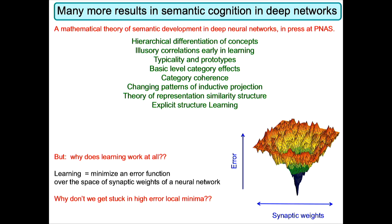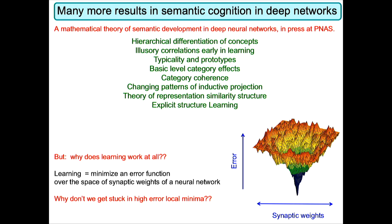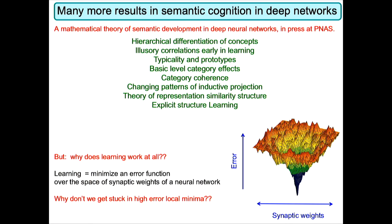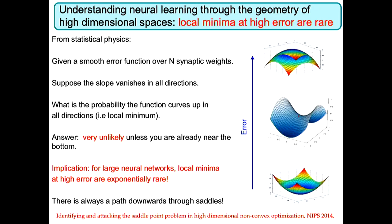We went on to develop a mathematical theory across a whole range of topics in psychology, and this raised an interesting question: why does learning work at all? Why is learning so smooth in humans? You can think about learning as minimizing an error function over the space of synaptic weights of a neural network — like a ball rolling downhill on an error landscape. A critical question is why don't we get stuck in local minima at very high errors? The geometry you see here is a function over two dimensions, but our intuition about geometry in low-dimensional spaces is woefully inadequate for thinking about geometry in high-dimensional spaces. We used ideas from statistical physics to think about that.